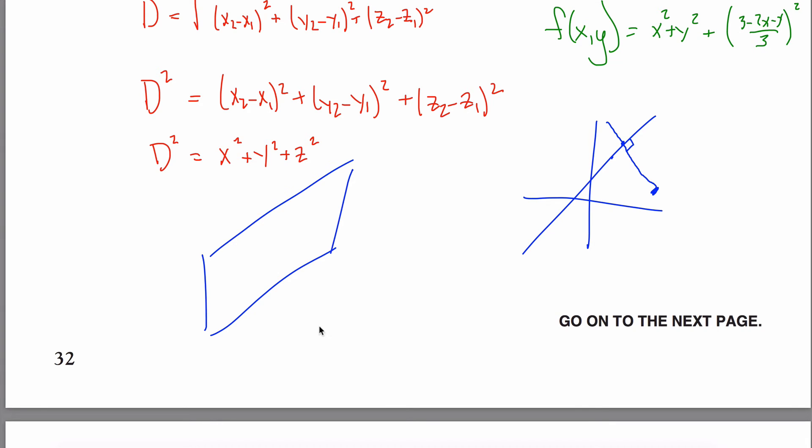You have a plane and you have some point that's not on that plane. And you want to find the point on the plane that's closest to this point right here. Well, you need the same idea of being perpendicular. Maybe I'll put it right here in my picture. But perpendicular to a plane is a little bit harder to describe. Perpendicular to a plane is really what's called the normal vector.